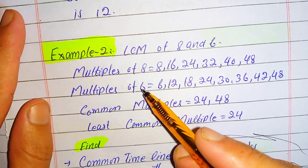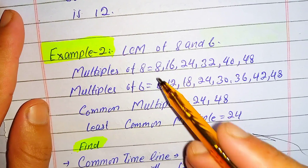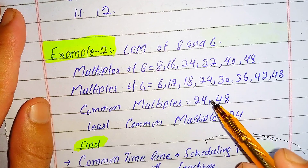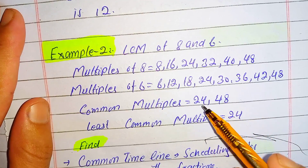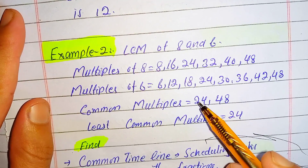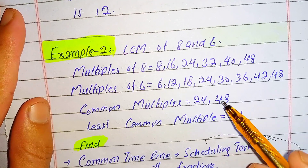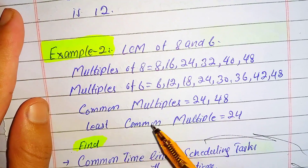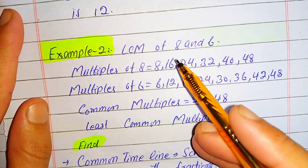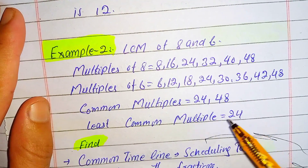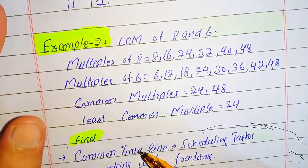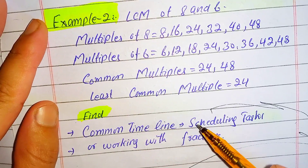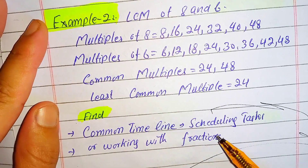The common multiples of 8 and 6 are 24 and 48. The least common multiple is 24. So the LCM of 8 and 6 is 24. We use LCM to find common timelines, scheduling, or working with fractions.